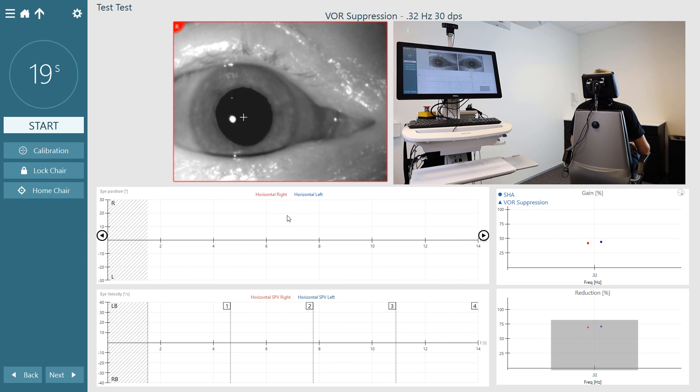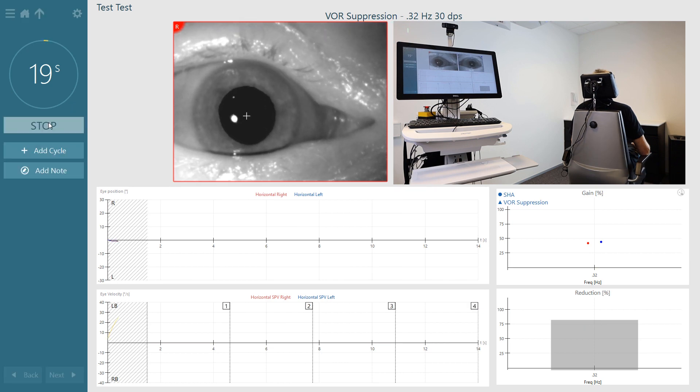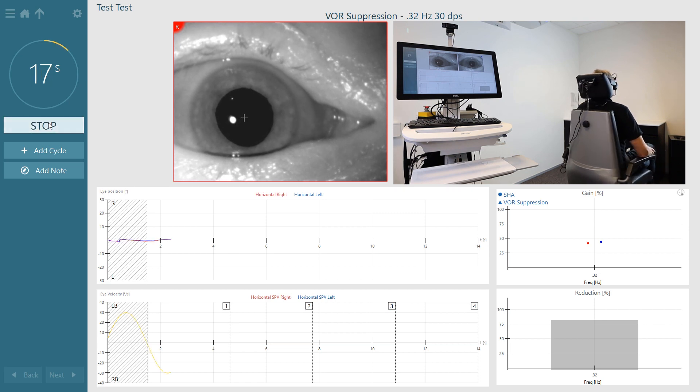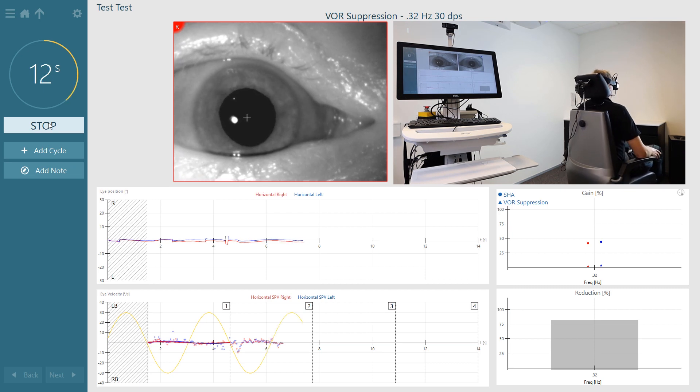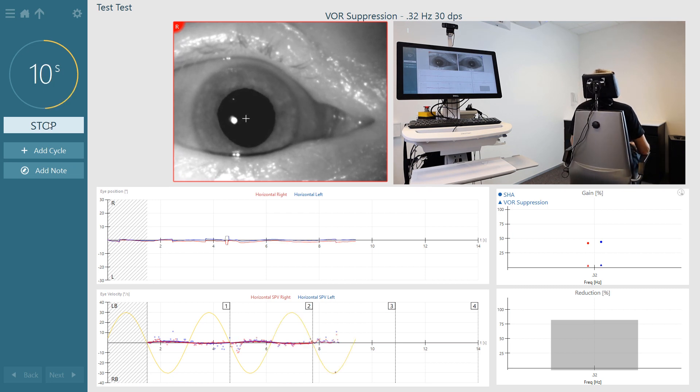It is said that the VOR suppression is much like measuring the fixation index when doing caloric testing. Caloric testing stimulates nystagmus as if a low frequency stimulus of 0.003 Hz was being used.